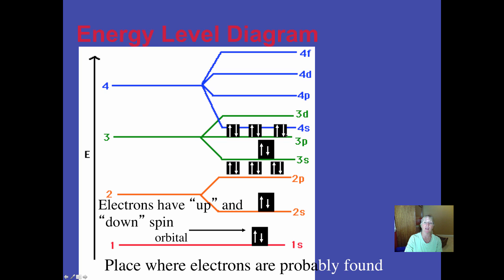Now, at this point, something interesting happens. We start filling up the s orbital at the fourth energy level before we fill up the d orbitals at the third. And that's because these 4s guys are closer to the nucleus.